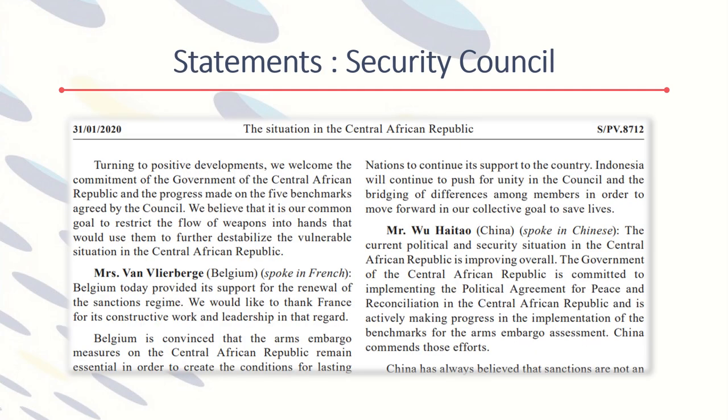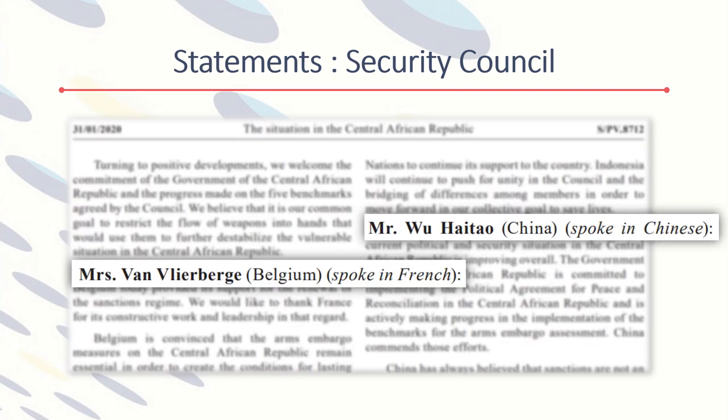At the top of the page of this Security Council meeting record, we see the meeting date, agenda, and symbol, with two columns of text containing the statements made by the representatives. Each speaker's name is followed by the country they represent and the language spoken, if different from the text of the meeting record.